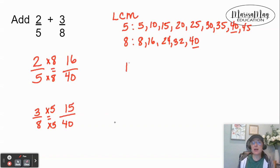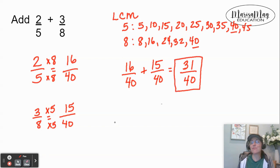So really this problem becomes 16 fortieths plus 15 fortieths. And we add the tops now. 16 plus 15 gives me 31, and we leave the denominators alone. So we get 31 over 40.